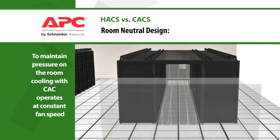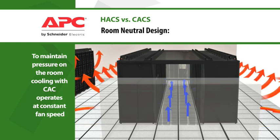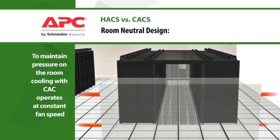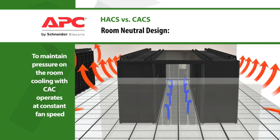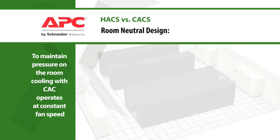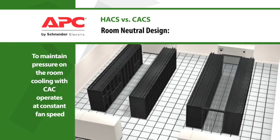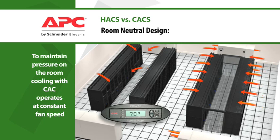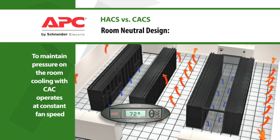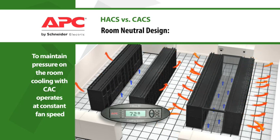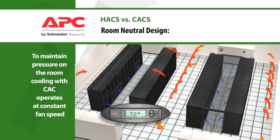The cold aisle containment system is designed to isolate the cold aisle and allow the room temperature to increase, which in turn increases the return air temperature to the room cooling units. Because of floor leakage and other mixing that happens within a room cooling environment, the return air temperature cannot reach the same temperatures as in the HACS, resulting in less efficient operation of the cooling system.